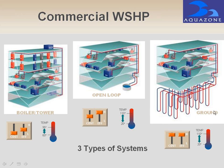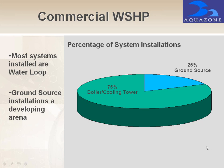In a ground loop commercial system, the same water source heat pump units are used — it's just different where you source your energy. Similar to residential, you utilize ground loops, most typically vertical bores for commercial, pulling energy from the ground and rejecting or exchanging heat with it. This is becoming more prevalent in newer water source heat pump applications, though it has a higher initial cost because of the bore drilling. Currently, a large percentage of commercial systems use boiler and cooling towers while only 25% are ground sourced — but that 25% is growing with more municipalities, schools, and government buildings funding ground source applications.